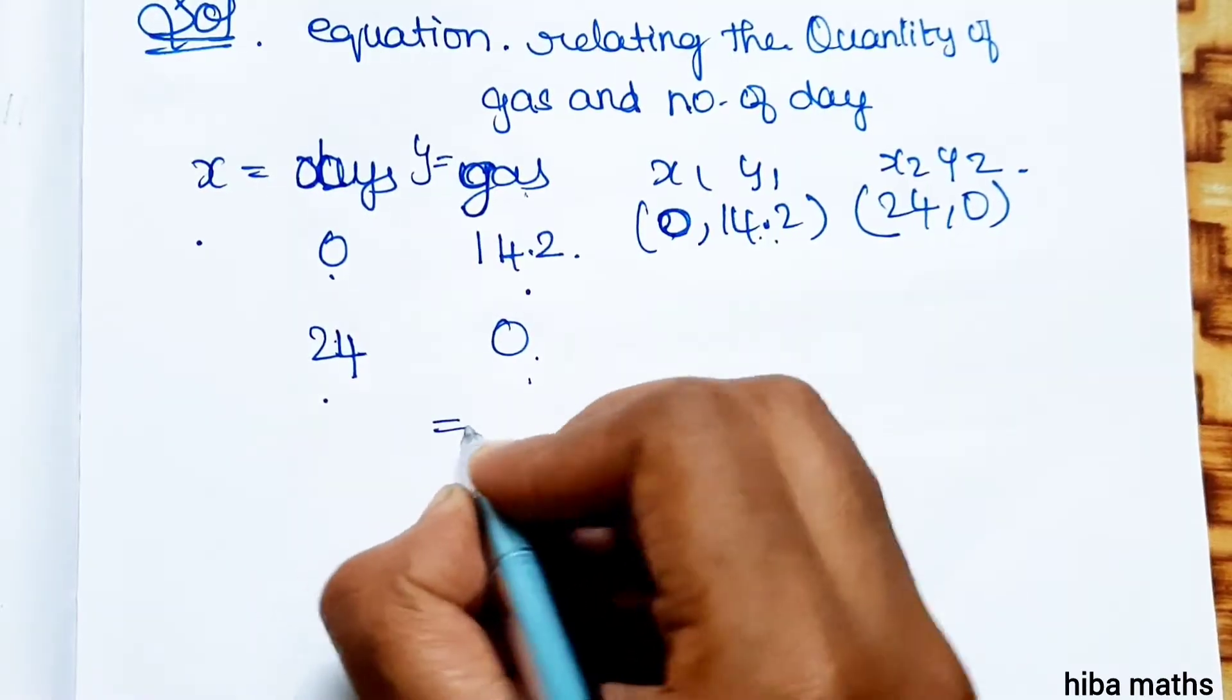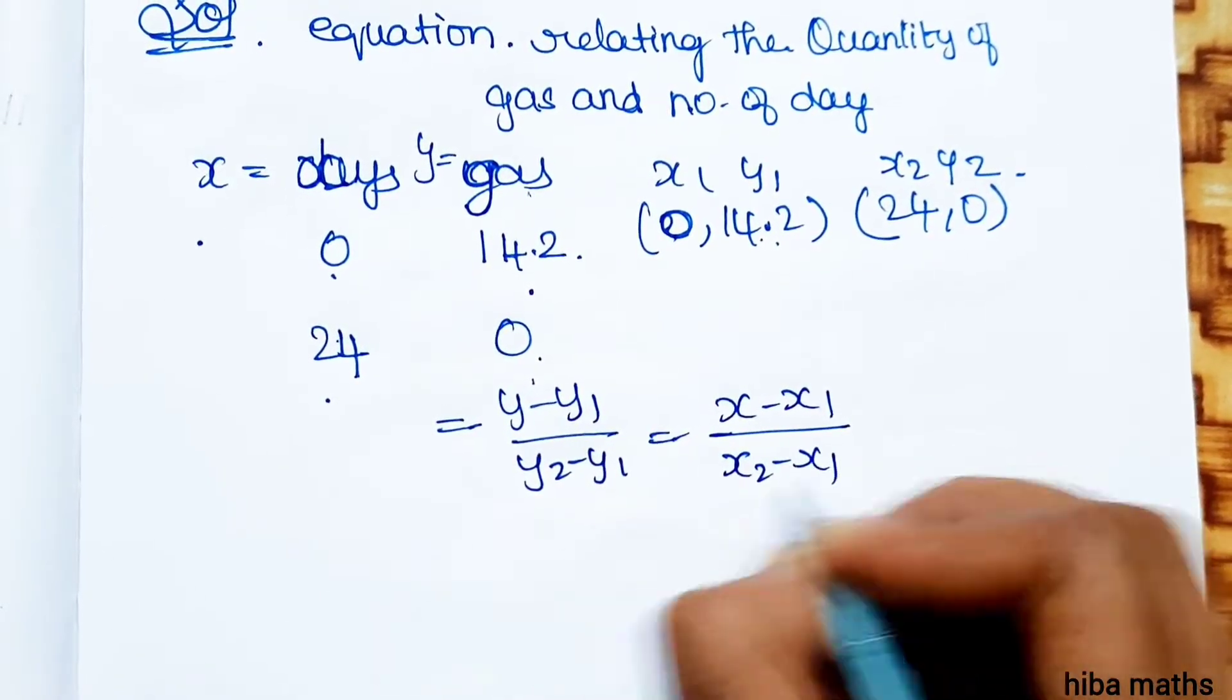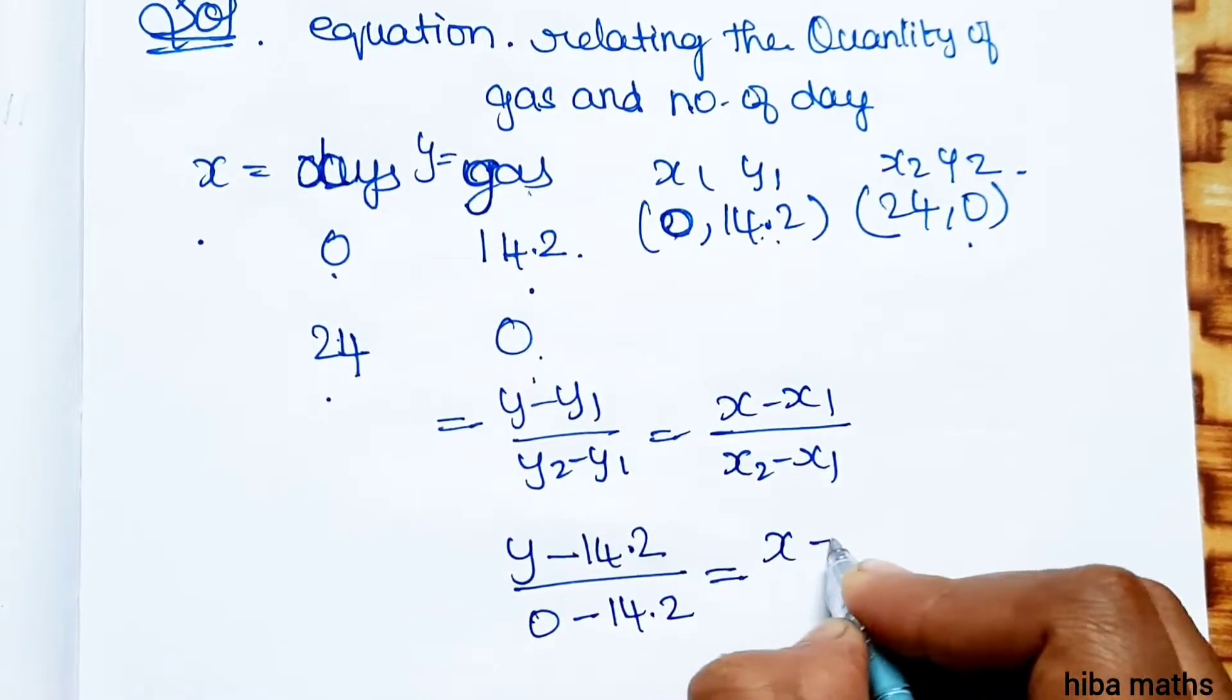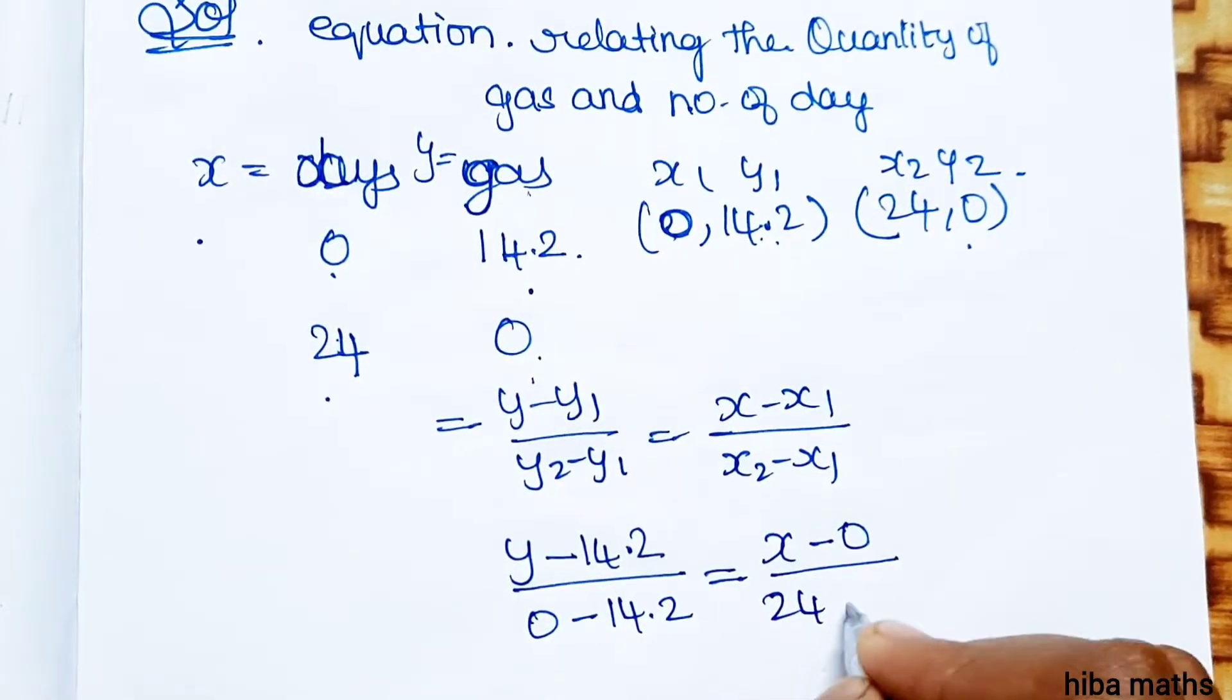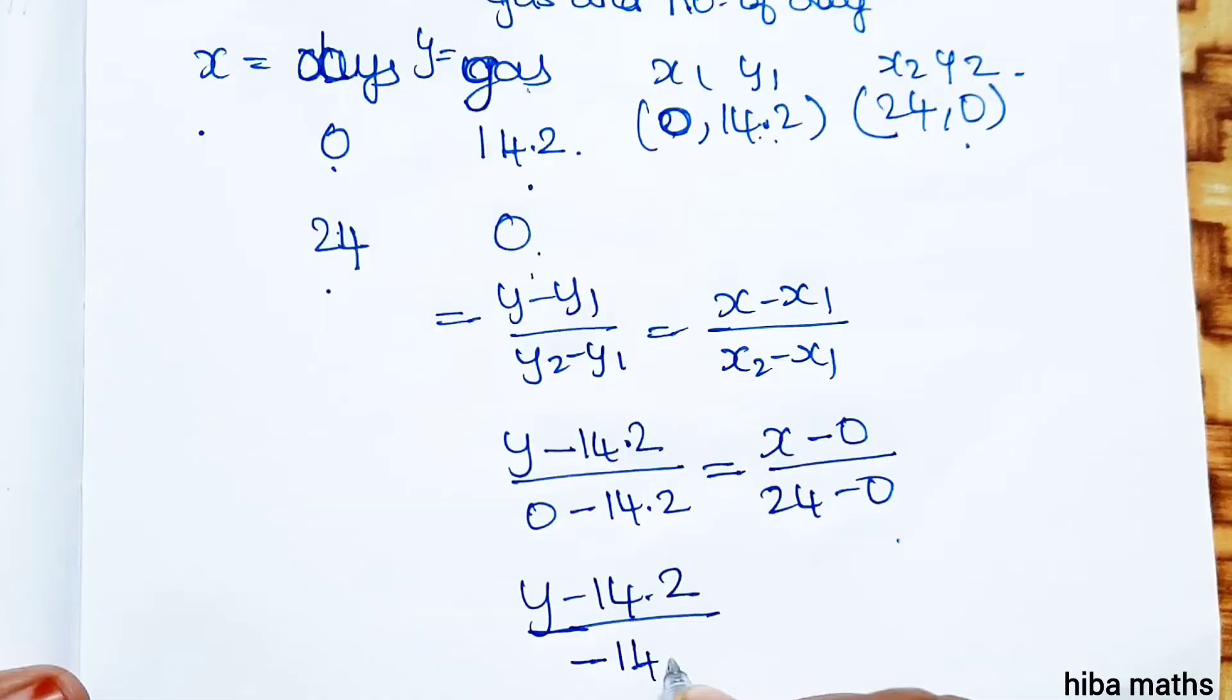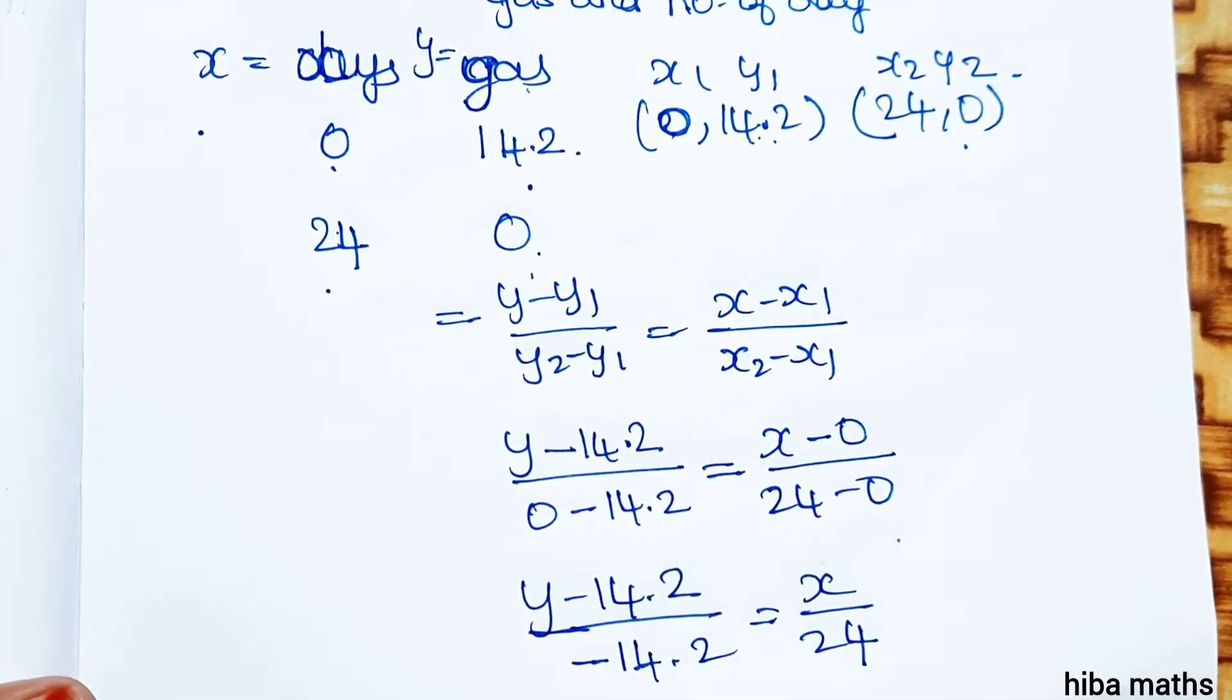Two point equation: (y - y1)/(y2 - y1) = (x - x1)/(x2 - x1). So, (y - 14.2)/(0 - 14.2) = (x - 0)/(24 - 0). Solving: (y - 14.2)/(-14.2) = x/24.